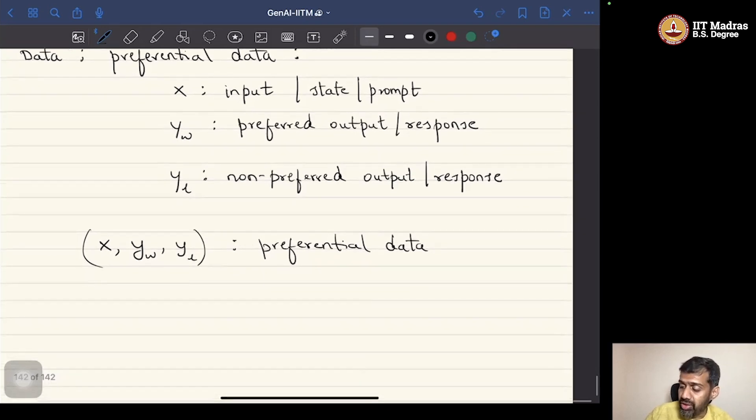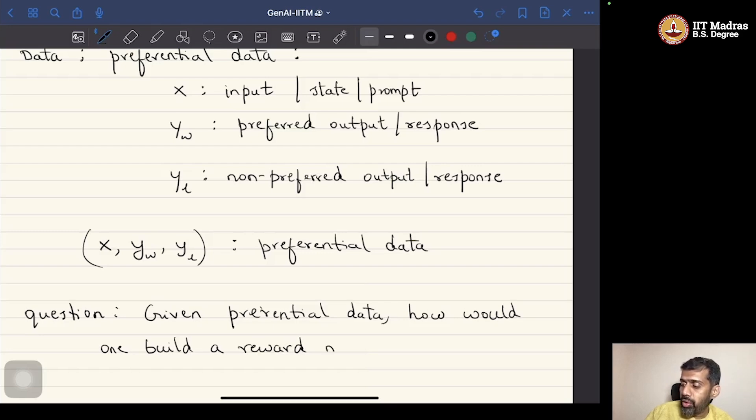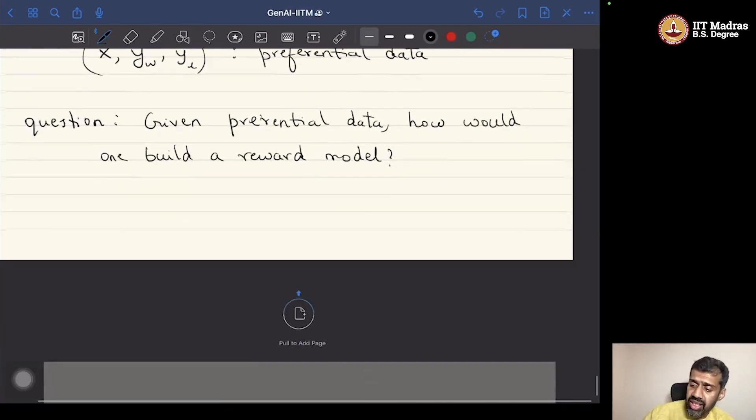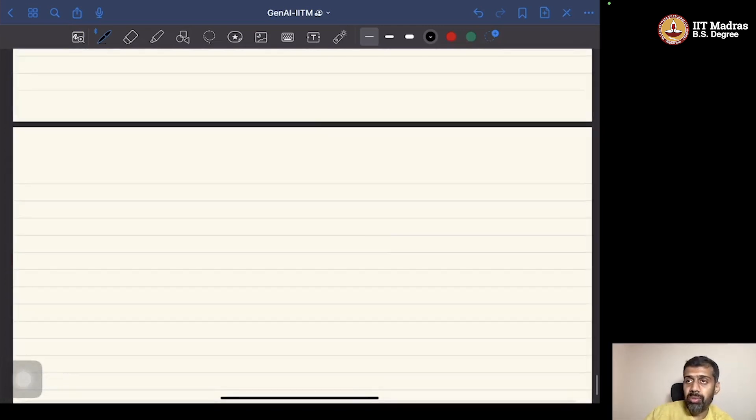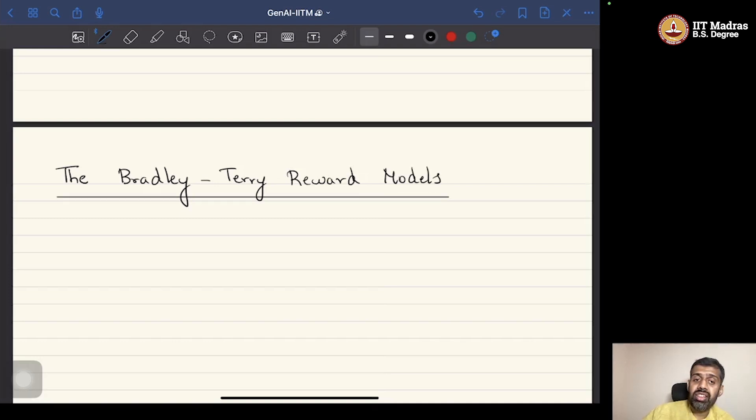Now, given preferential data, we have a question: given preferential data how would one build a reward model? There are multiple ways to answer this question. There is one very famous way which is called the Bradley Terry model. Let us look at that. This is one of the classical models that would consume this sort of preferential data and outputs a reward model.